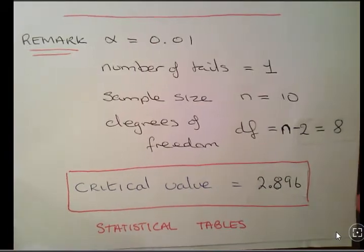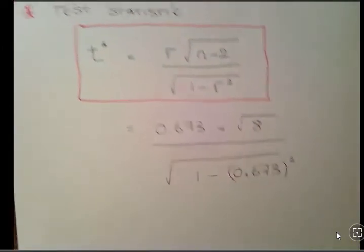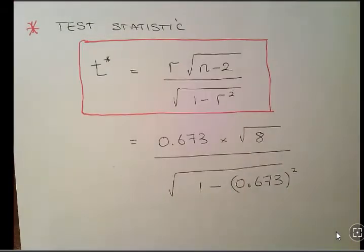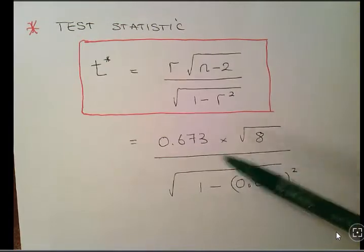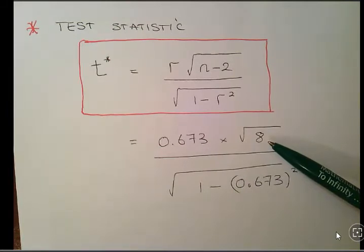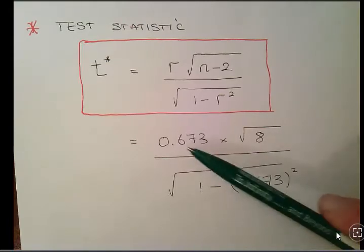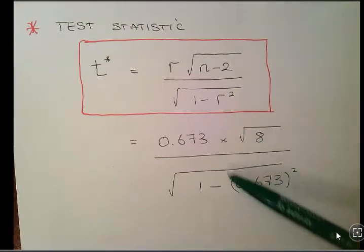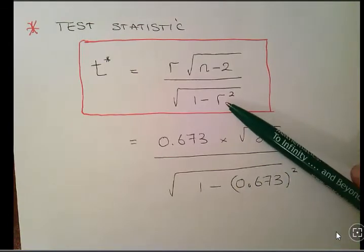What I'm going to do now is calculate the test statistic. That is the formula for the test statistic. I'm just going to say test statistic or TS from now on, but this is how it might be formally presented. R is the Pearson correlation coefficient which we have just been given. N-2 is the sample size or the number of cases minus 2, so that's 10 minus 2 which is 8, and we're using the square root of that. 1 minus R squared is 1 minus 0.673 squared. We were told what R was at the start of the video.